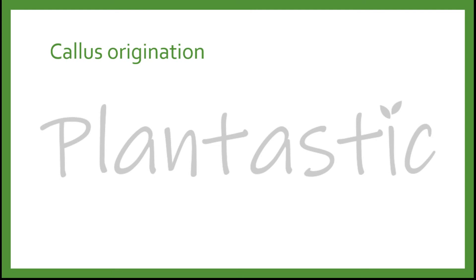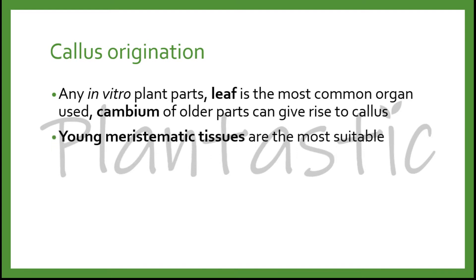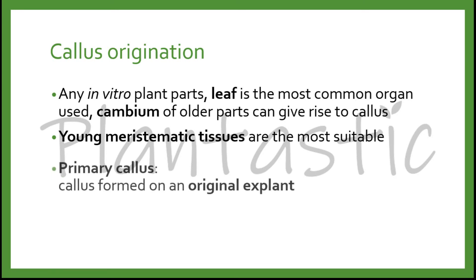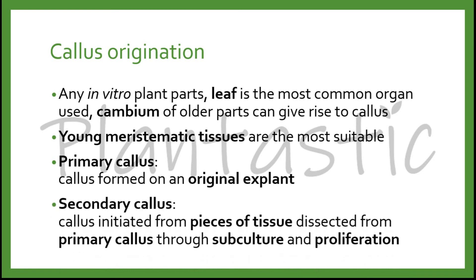Callous Origination: Callous can be originated from any in vitro plant parts, especially the leaves, as leaves are the most common organ used in most research. The cambium of older parts can also give rise to callous. Young meristematic tissues are the most suitable explant to induce callous. There will be primary callous, which is the callous formed from an original explant, and also secondary callous, in which the callous was initiated from pieces of tissue dissected from primary callous through subculture and proliferation.